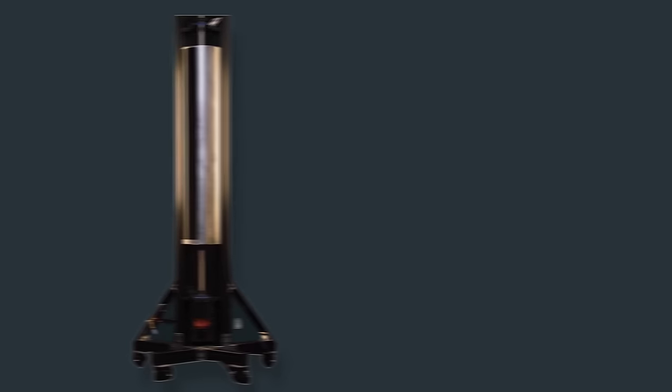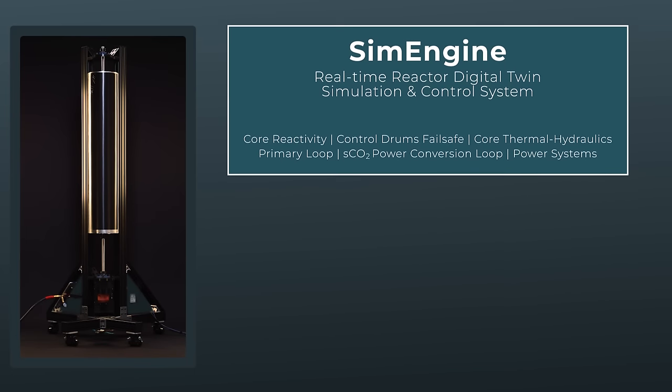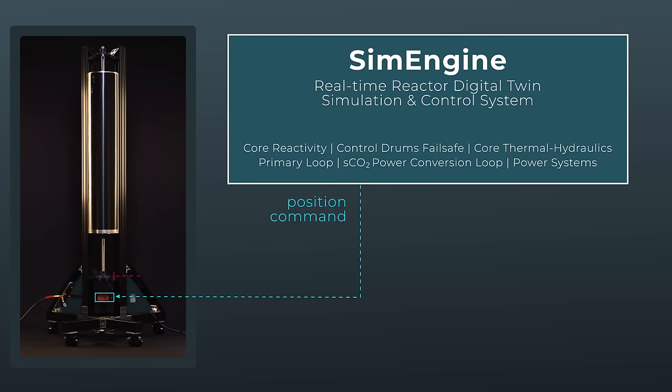SimEngine's real-time modeling capability enables direct coupling with physical systems, demonstrated here by the integration of a control drum into the sim. Position commands are sent to the drum, while its real position is encoded and fed back into the system. Any mismatch between the physical and simulated system is used to improve modeling fidelity, allowing for rapid risk buy-down.